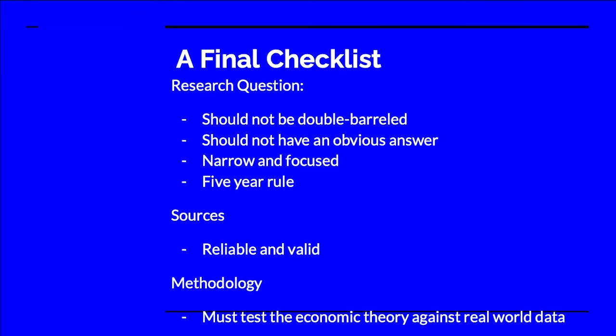Also for criteria A, students need to think about their sources and discuss to what extent they are reliable and valid — why they've chosen nominal GDP over real GDP, for instance. And lastly, students need to think about their methodology. The key to a strong methodology is to think: how can I test this economic theory against the real world, against real world data, against real world phenomena?